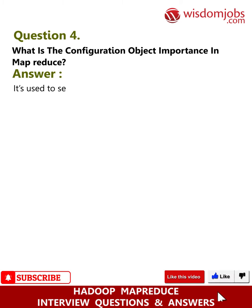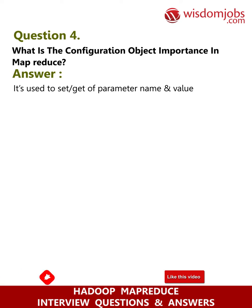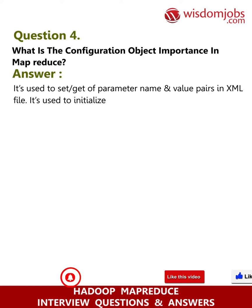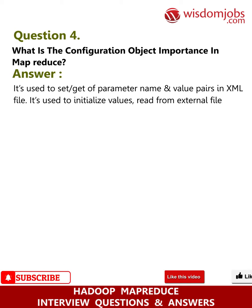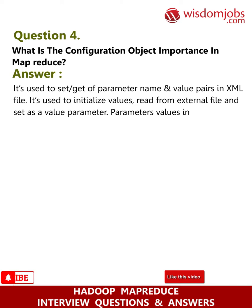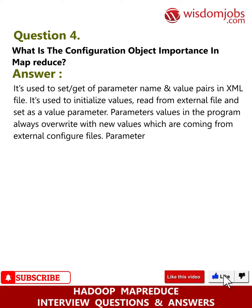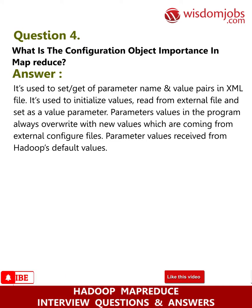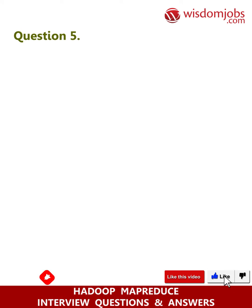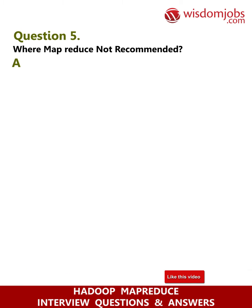Question 4: What is the importance of the Configuration object in MapReduce? Answer: It is used to set or get parameter name and value pairs in an XML file. It is used to initialize values read from an external file and set them as value parameters. Parameter values in the program always overwrite with new values coming from external configuration files.